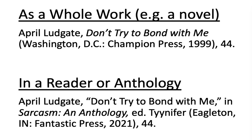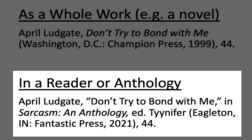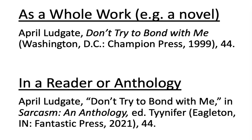For primary sources in publications: if the source is its own edition — like a novel or Virgil's Aeneid — you just cite it like a book. Example: April Ludgate, Don't Try to Bond with Me. Washington DC: Champion Press, 1999, page 44. But if you find a primary source in a reader or anthology, cite it exactly like an essay. For instance: April Ludgate, 'Don't Try to Bond with Me.' In Sarcasm: An Anthology, edited by Tinnifer. Eagleton, Indiana: Fantastic Press, 2021, 44.